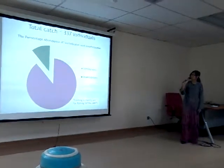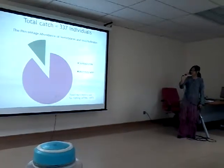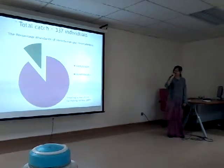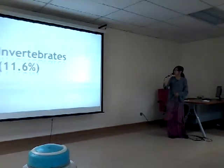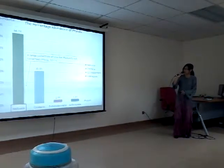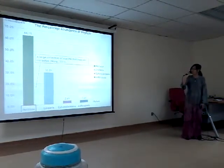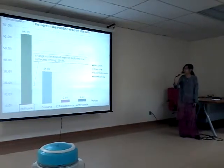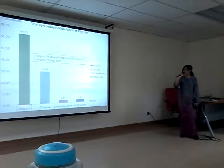Proceeding to the results and discussion: the total trawl catch is 337 individuals, where the large number are vertebrates at 88.4% and invertebrates at 11.6%. I'm going to focus on the smaller part, which is the invertebrates first. We have four findings, where the highest one is Mollusca, and studies by WOM 2011 also state that a large collection of Mollusca was collected.